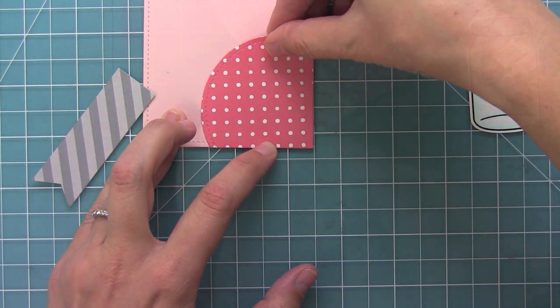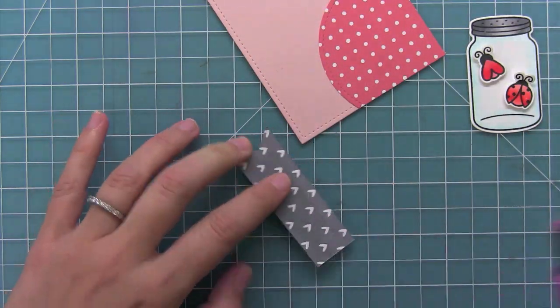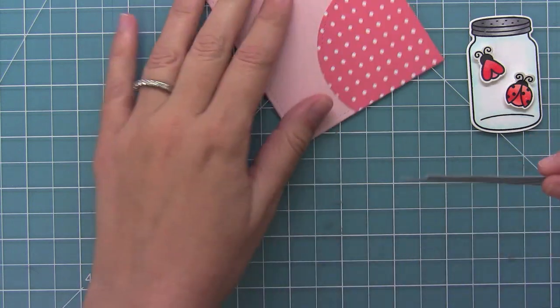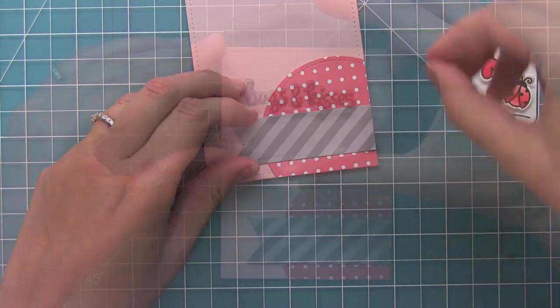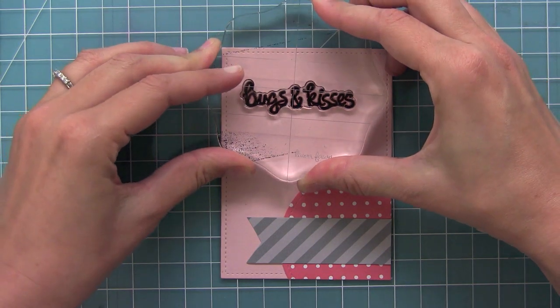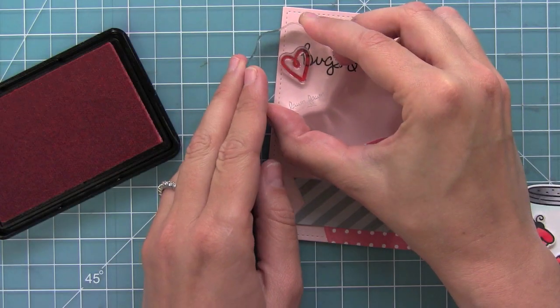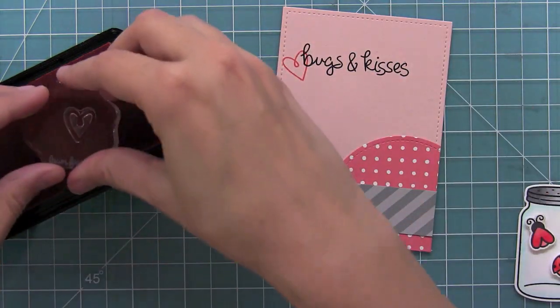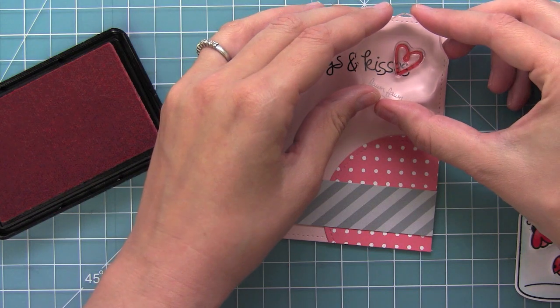So I can go ahead and adhere down both my circle and this little flagged piece, and then I'm going to be ready to stamp my bugs and kisses sentiment right at the top. And I also wanted to kind of ground the sentiment so I decided to stamp these hearts on either side of it and I thought it looked kind of cool, kind of like the hearts are behind the sentiment.